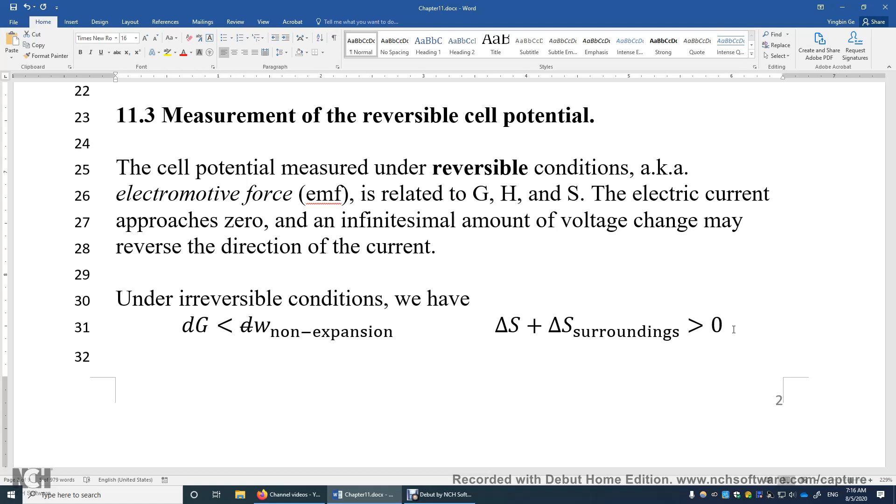In this case, we say the cell chemical potential is electromotive force, and then we can use the Nernst equation. The Gibbs energy change of the reaction is negative nFE.